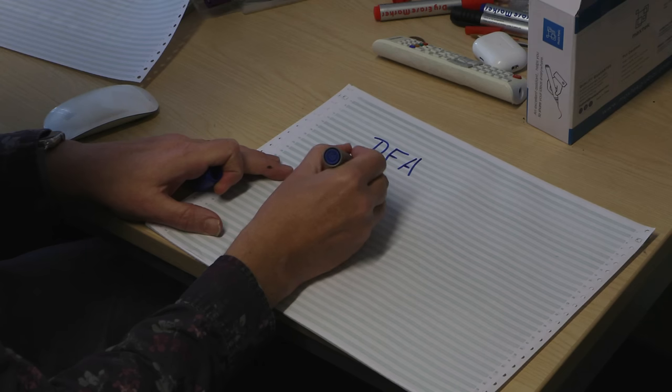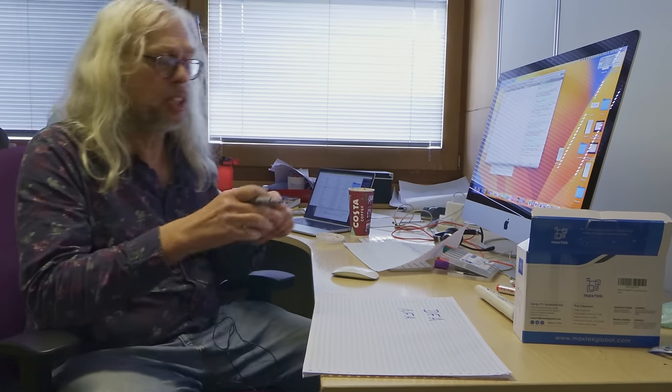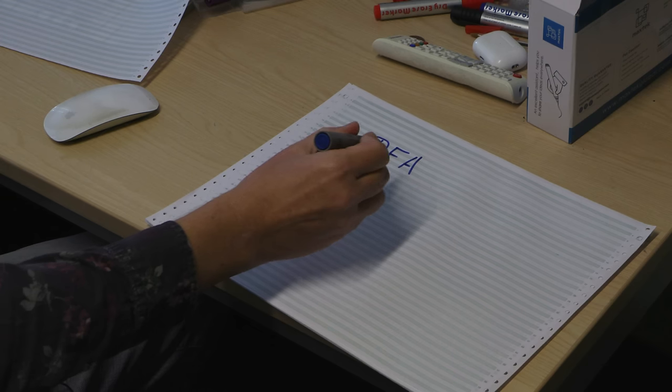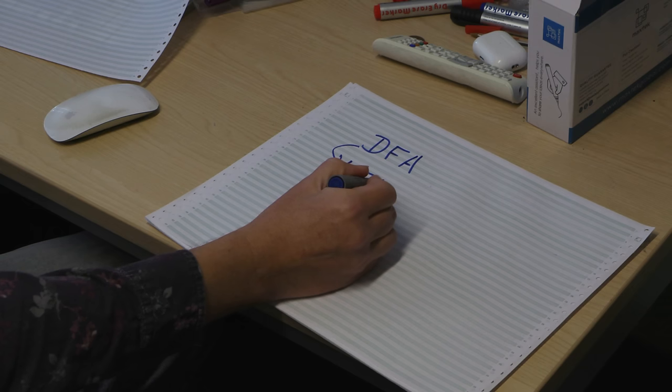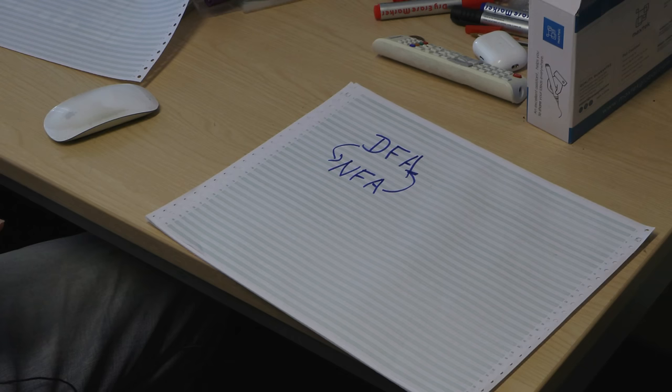Regular expressions are a way to define what we call regular languages. In the previous videos we looked at DFAs — deterministic finite automata — and NFAs — non-deterministic finite automata. DFAs are little machines with a state; they read a symbol and go to another state, accepting or rejecting a string. NFAs are a slight variation with non-determinism. Every DFA is an NFA, and we can turn an NFA into a DFA via the power automaton construction, so they define the same set of languages.